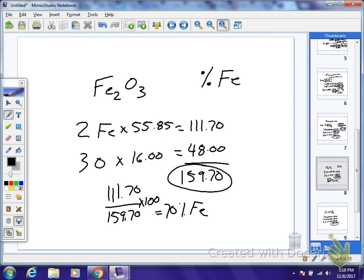If I want to find a percent, I'm going to take the weight of an element, the total weight, which is 111.70, not the 55.85, because I have to have the total. So I take 111.70 divided by 159.70, and I get 70%. And that's how you find percent by mass.